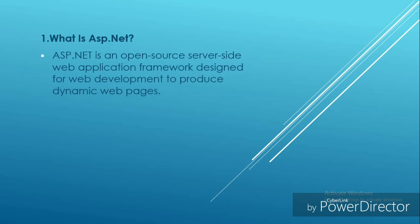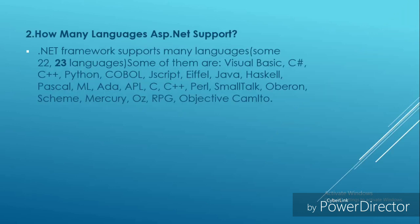Second question: how many languages does ASP.NET support? The .NET framework supports about 22 to 23 languages, and they are: Visual Basic, C, C Sharp, C++, Python, COBOL, JScript, FL, Java, Haskell, Pascal, ML, ADA, APL, Perl, Smalltalk, Eiffel, Scheme, Mercury, Oz, RPG, and Objective-C.